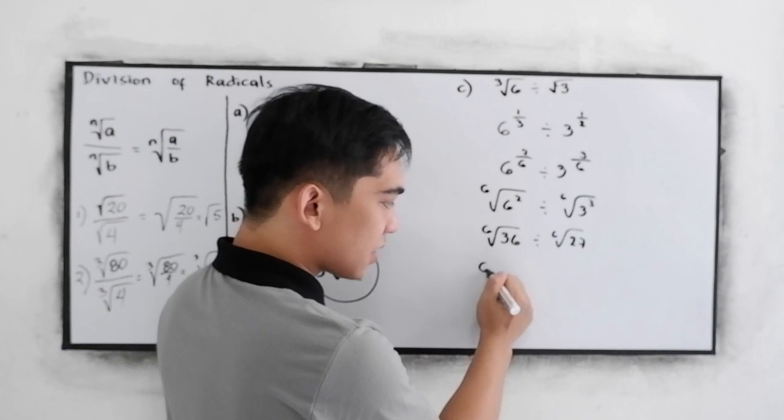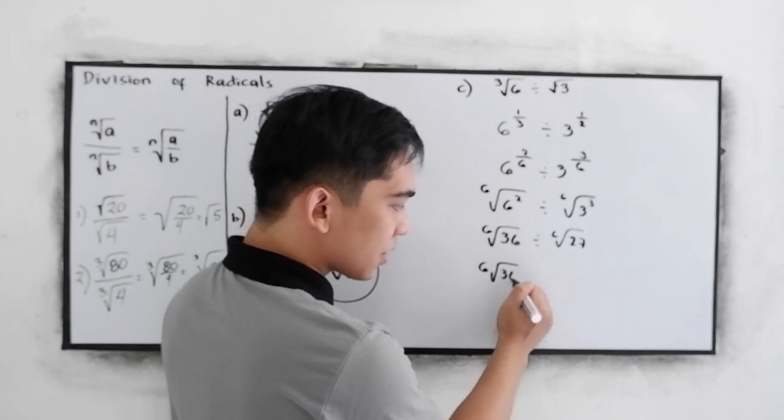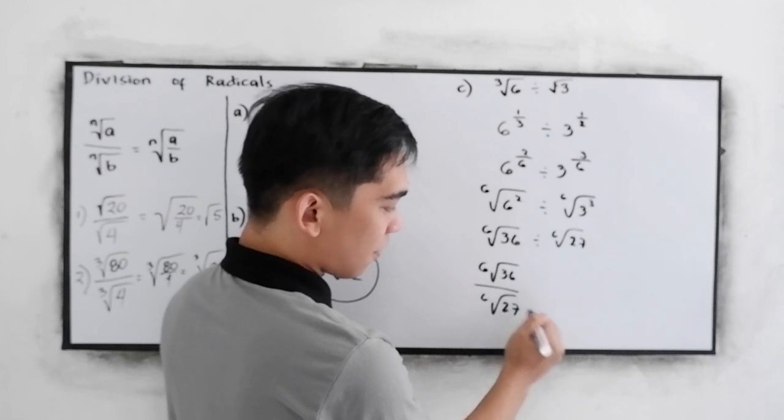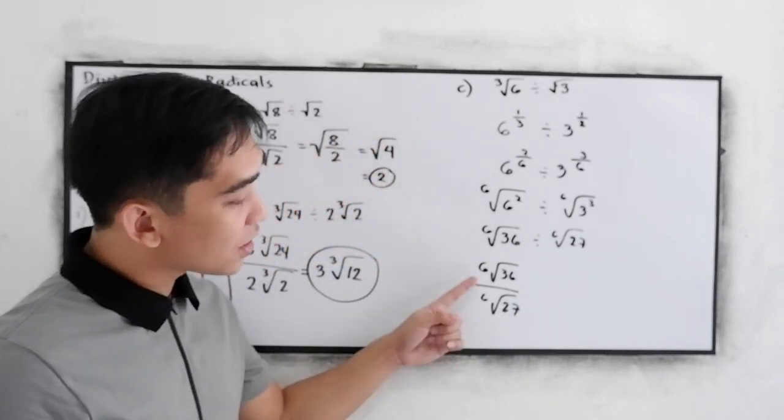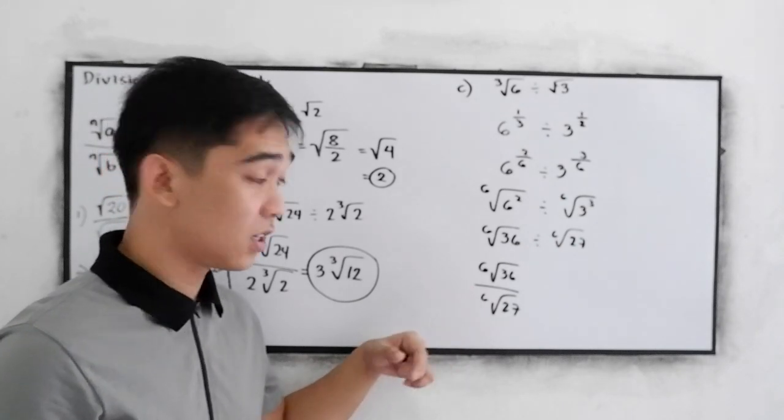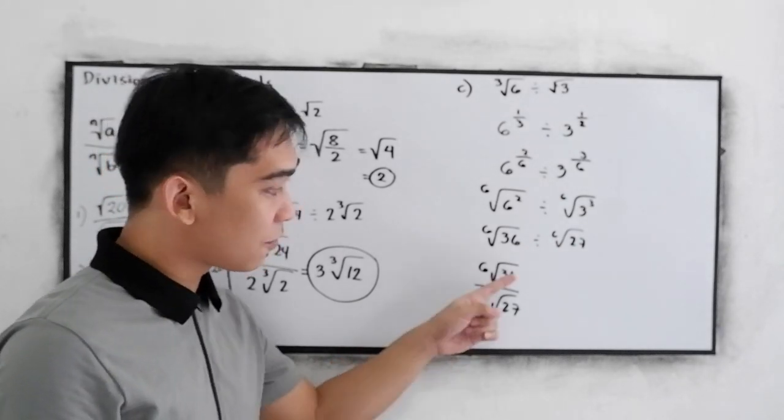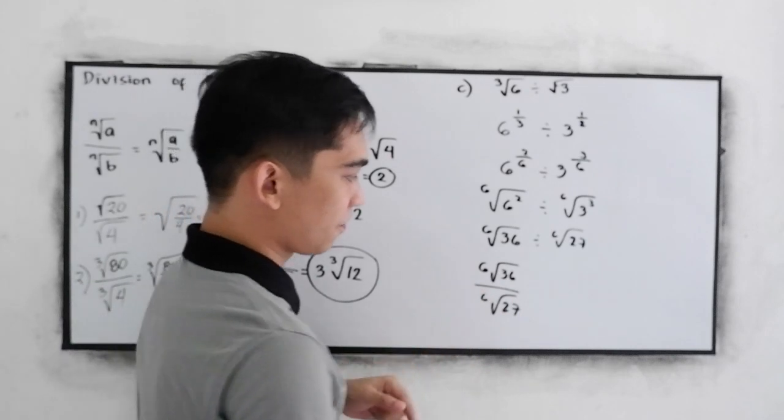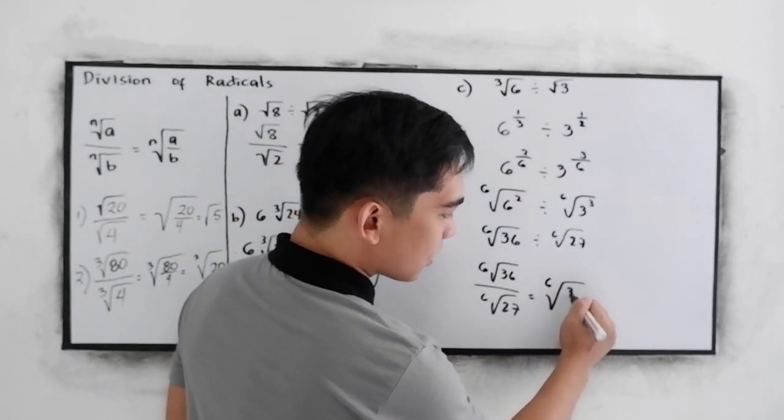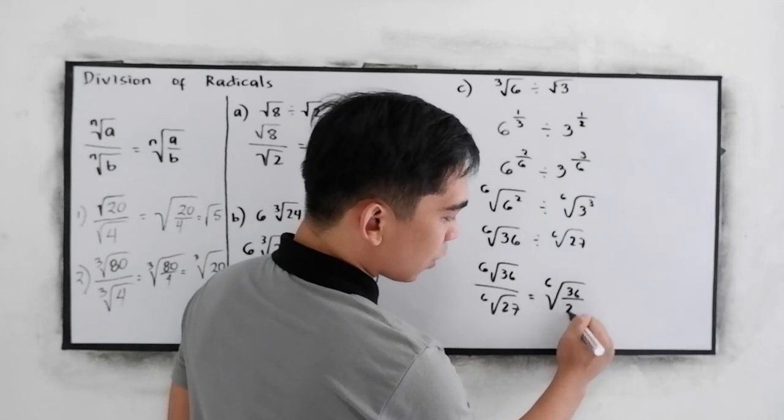This can be written as 6 root of 36 over 6 root of 27. Now, we have the same index for the numerator and for the denominator. Now, we can divide our radicands. 6 root of 36 over 27.